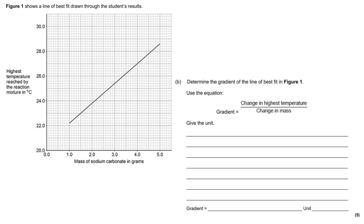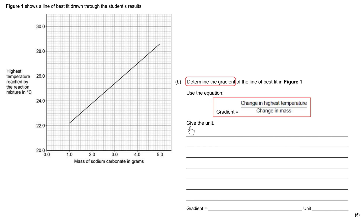Figure one shows a line of best fit through the student's results. The x-axis shows the mass of sodium carbonate in grams — the thing that has been changed — and the y-axis shows the highest temperature reached by the reaction mixture in degrees C. We've been asked to determine the gradient using the equation: gradient = change in highest temperature ÷ change in mass, and to give the unit. Five marks are available.